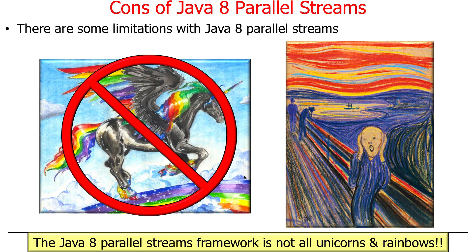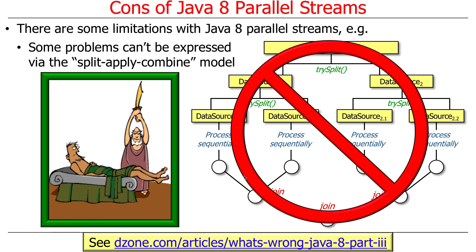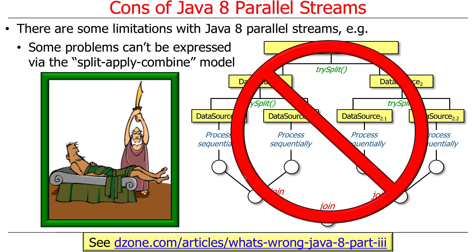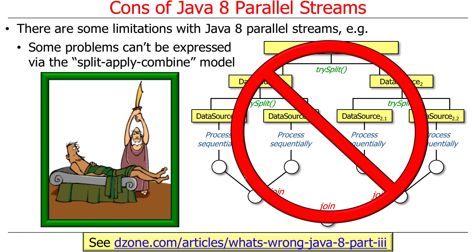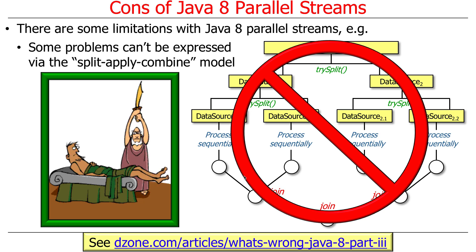Not everything is unicorns and rainbows — there are downsides and limitations with parallel streams, and it's important to understand them to be an effective programmer. One of the main issues is that not everything is easily expressed in the form of the split-apply-combine model of parallelism. That's for problems that lend themselves to divide-and-conquer style approaches where you can split a big problem into smaller problems and map them evenly to different cores to run in parallel. Not every problem has that structure.